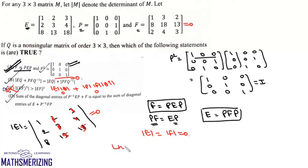If we look at the left-hand side, it's det(EQ + PF·Q⁻¹). We know that E = PFP, so we can write this as det(PFPQ + PF·Q⁻¹). If we take PF common, we can write |PF|·|PQ + Q⁻¹|.